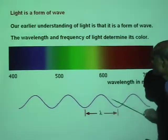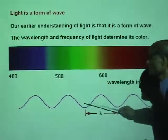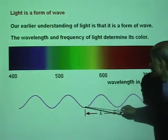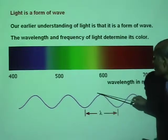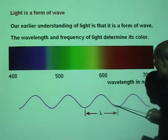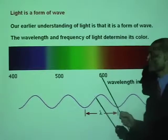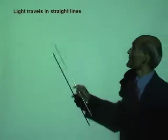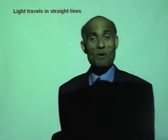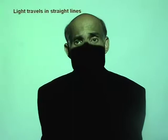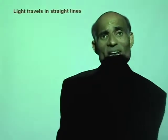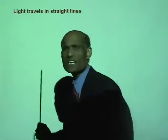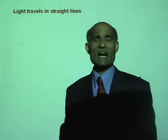A wavelength contains a full crest and a full trough. Some of the properties of light: light travels in a straight line.